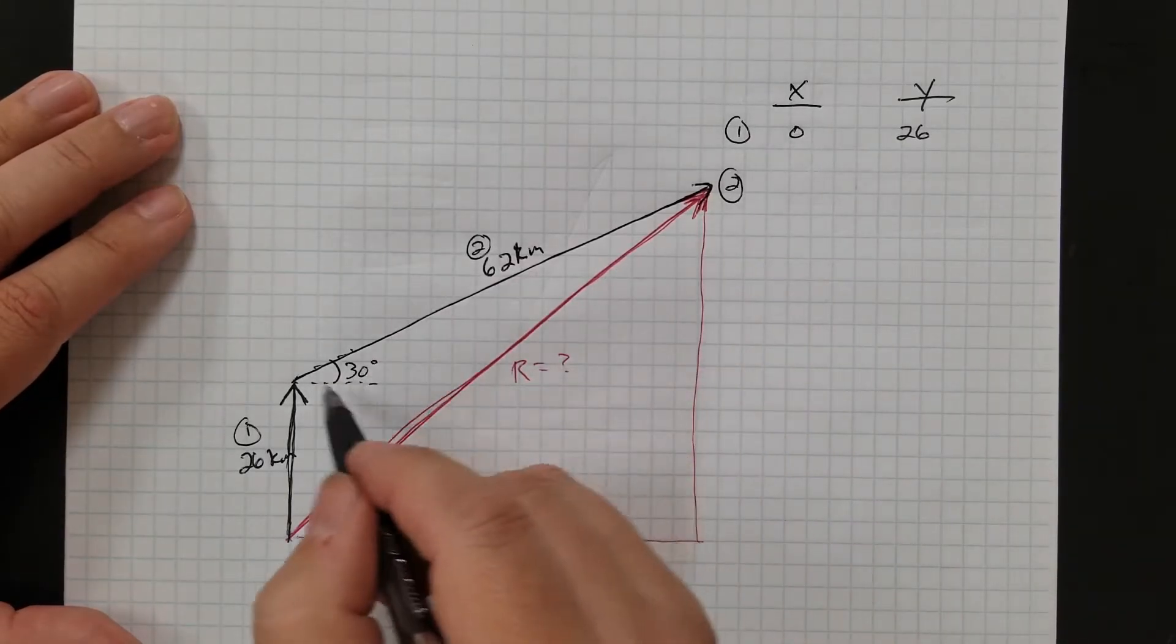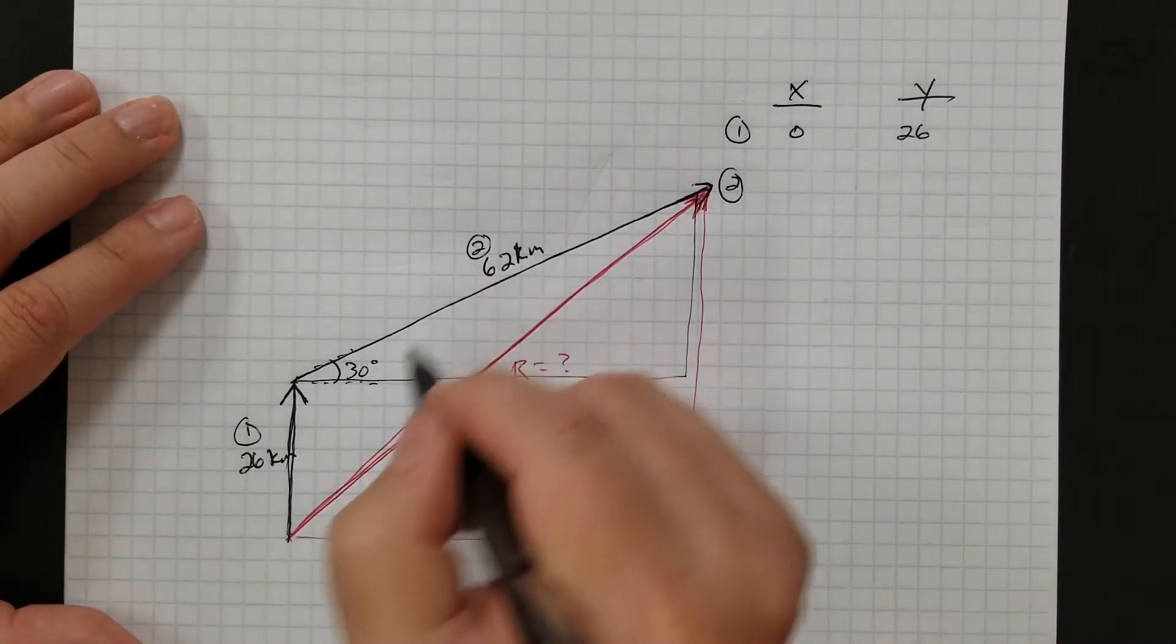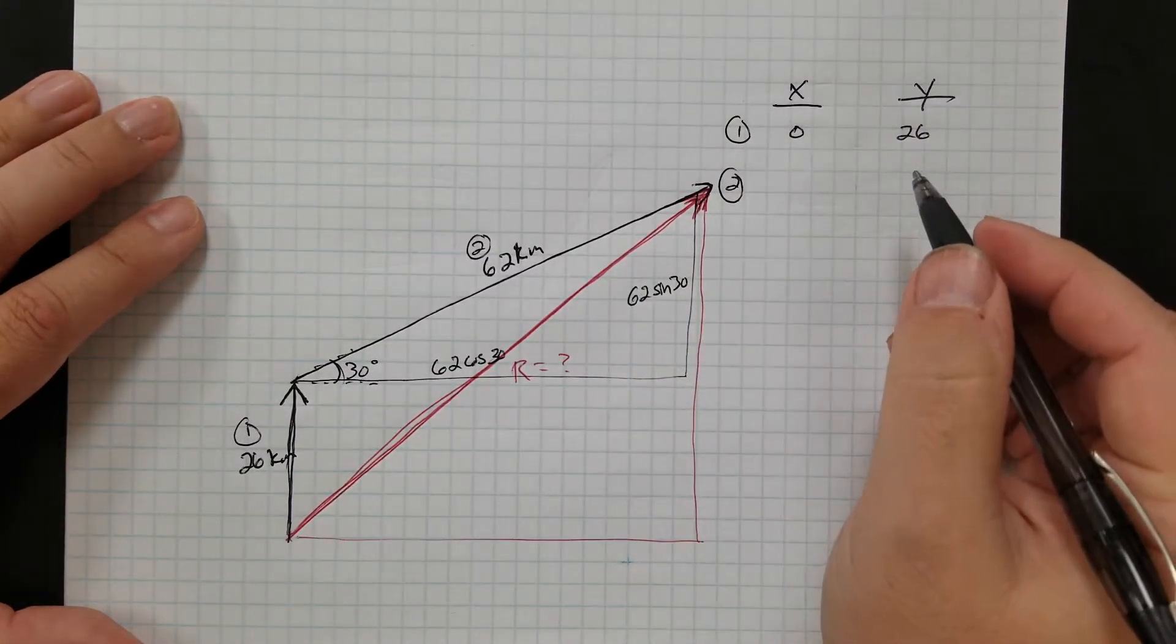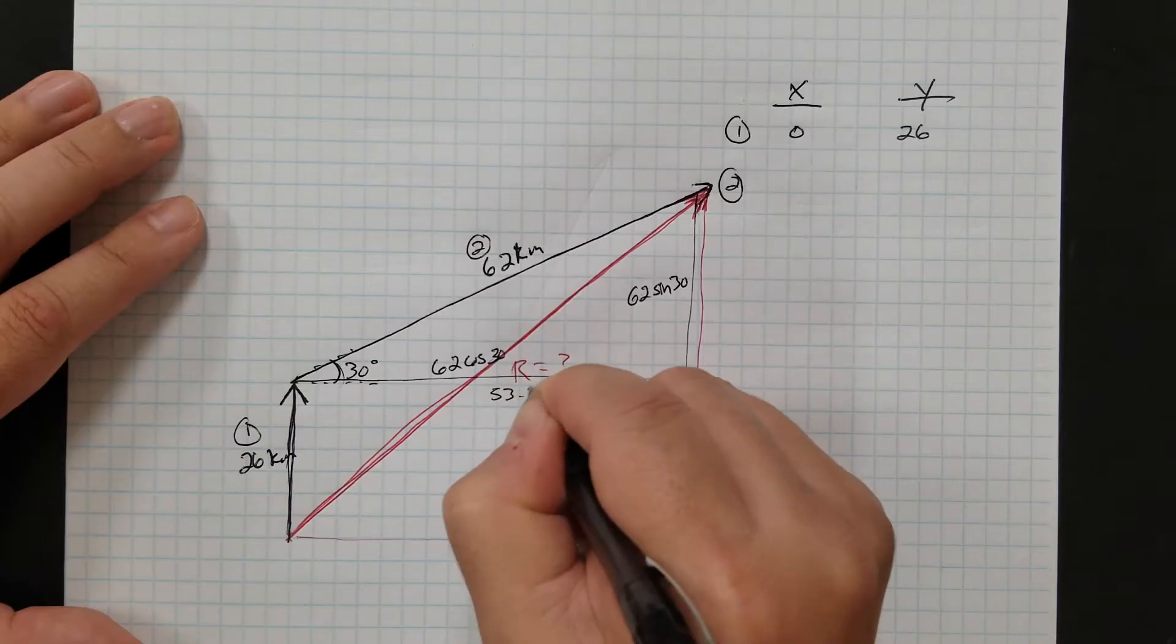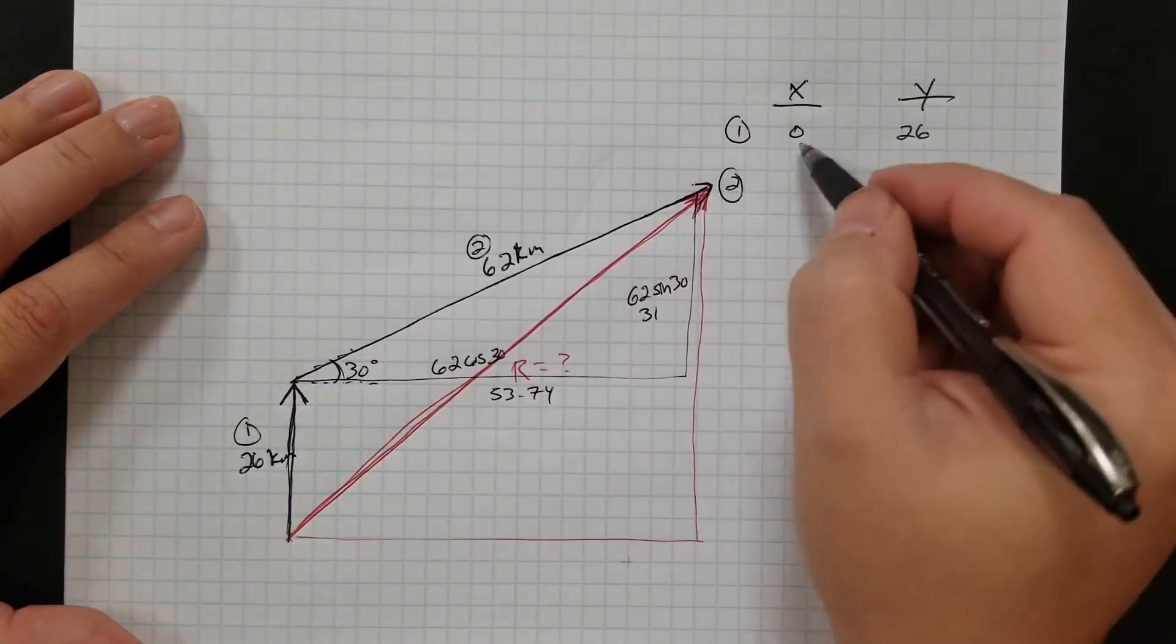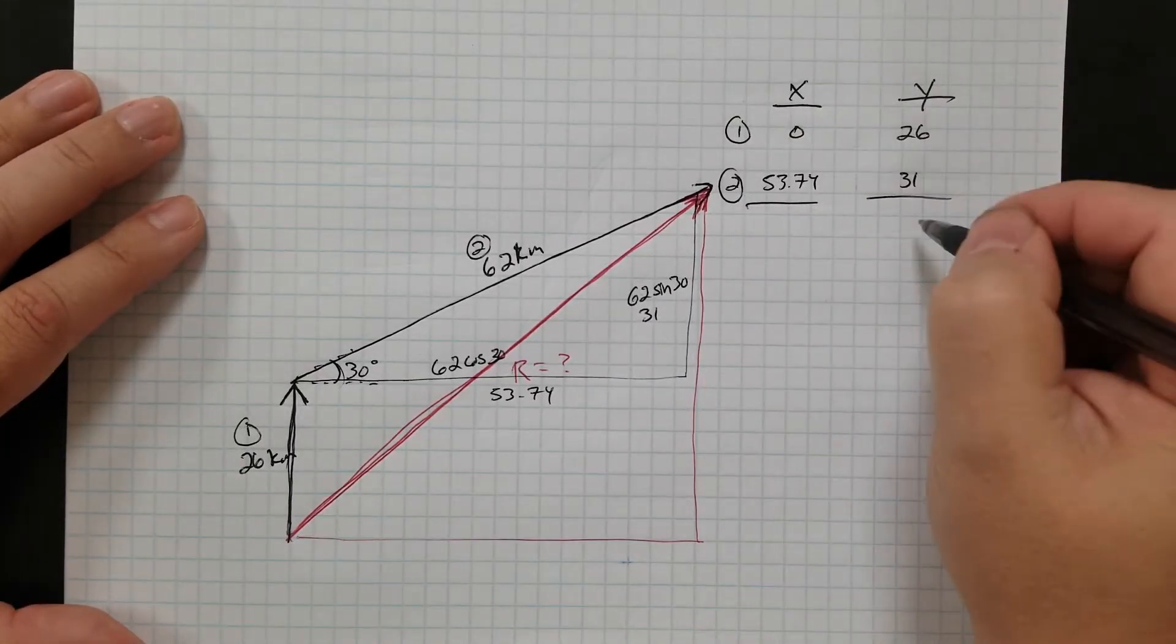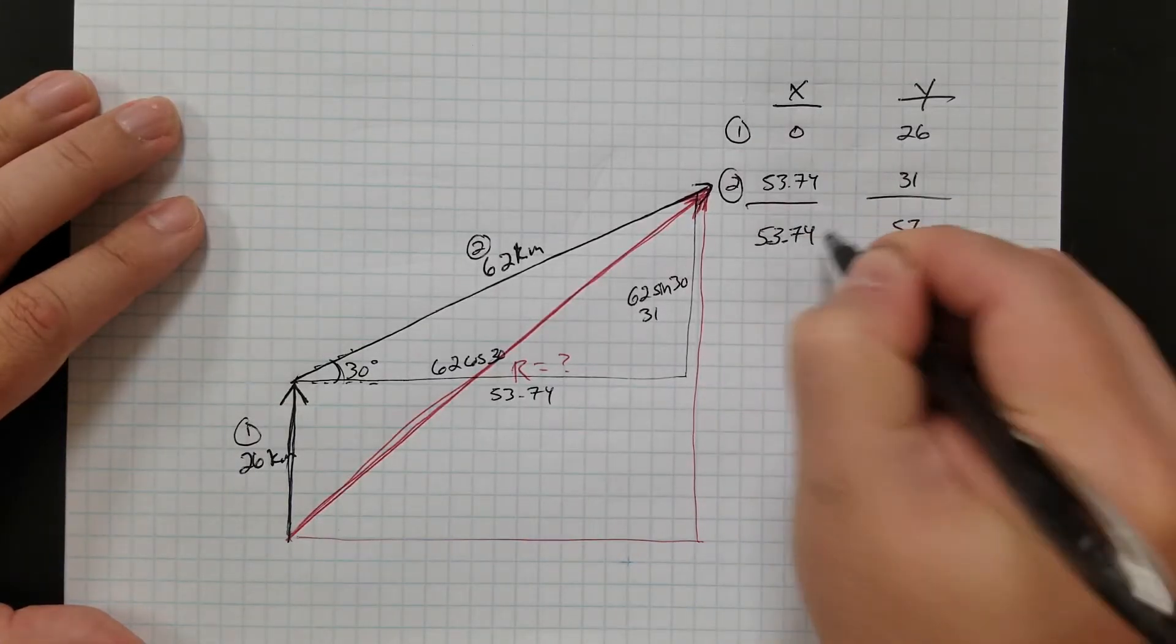Okay, vector 2. I need to break this 62 up into how much goes this way and how much goes that way. So this one, here's my angle. This side is going to be 62 cosine 30 and this side over here is going to be 62 sine 30. Okay? And so when you do this, 62 cosine 30 comes out to 53.74 and 62 sine 30 comes out to 31. So that means my x for number 2, it's going to be 53.74 and my y for number 2 is also going to be 31. They're both pointing up, so I'll keep them on the same side. And then all I do is add them up.